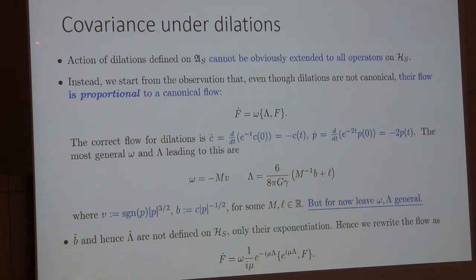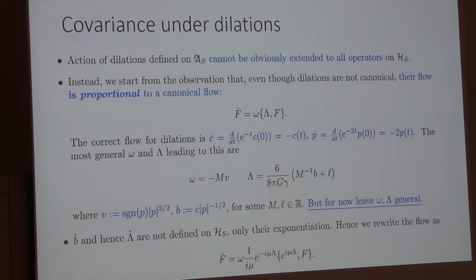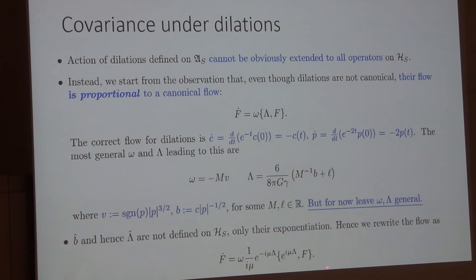I gave earlier an action of dilations defined on the quantum algebra, but the problem is I need to extend this action to all operators on the Hilbert space. The strategy we took is to note that even though dilations are not canonical transformations — they don't preserve the Poisson brackets — nevertheless the flow is proportional to a canonical flow. If you have some phase-space function and flow it under dilations, this equals the Poisson bracket of some generator with that function times some multiplicative function. We can solve for this generator lambda and factor omega to get the right flow, and it turns out that the M and L coefficients don't matter — they drop out when plugged into the flow equation.